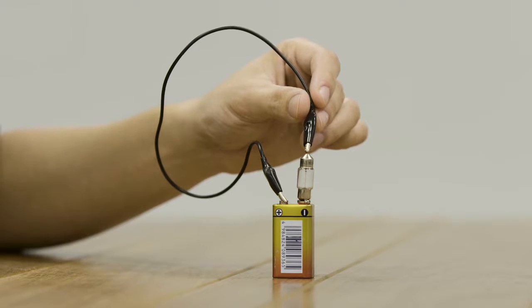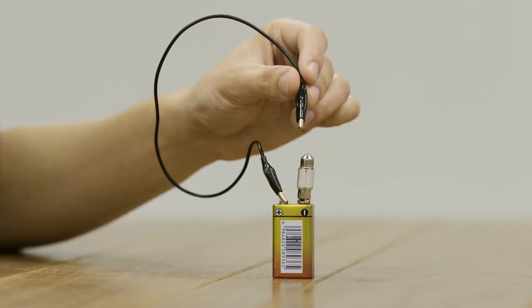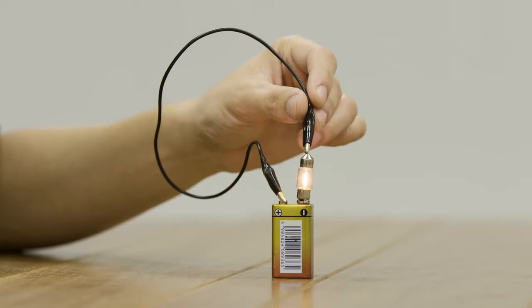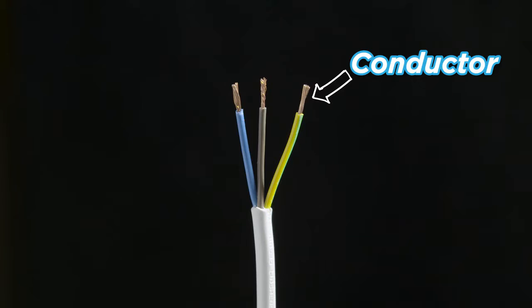To understand how electricity works we first need to know what a conductor is. A conductor is anything that allows electricity to travel along or through it like metal.